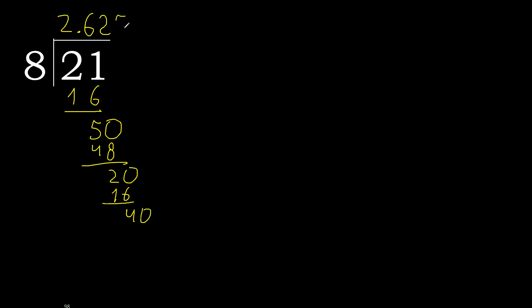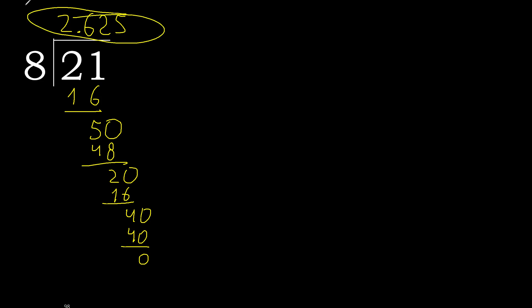40: 8 multiplied by 5 is 40. 40 minus 40 is 0. Therefore finish it — 21 divided by 8 is here. Ok.